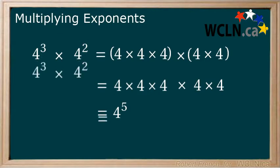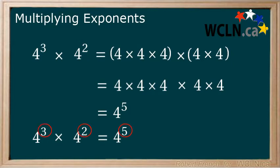Now, we'll bring down the original part of our question and we see that 4 to the power of 3 multiplied by 4 to the power of 2 equals 4 to the power of 5. Do you notice a connection between the original two exponents and the new single exponent? 3 plus 2 equals 5.